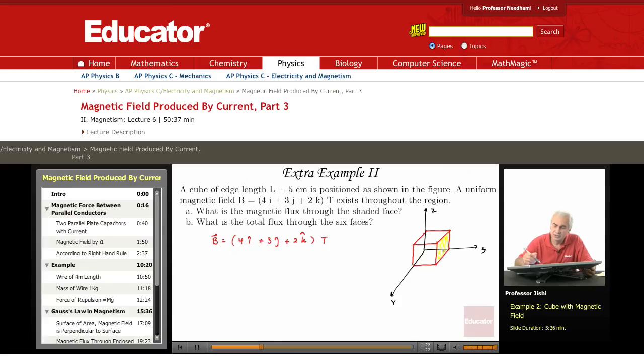This is the shaded face. What is the magnetic flux through the shaded face? The point here is to first realize that the shaded face, if I take the normal n hat, the shaded face is along the y-axis. So n hat is equal to j hat because it's a unit vector along the y direction.